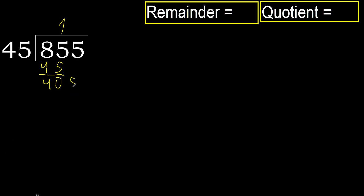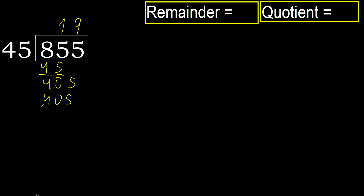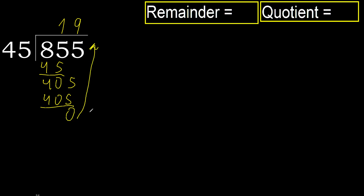Next, bring down: 405. 45 multiplied by 9 is 405, it is not greater. OK, subtract. Next, there is no remainder, therefore finish it.